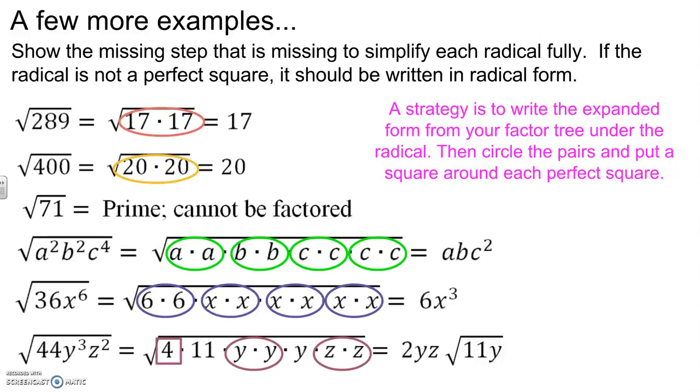Four was a perfect square. So I'm using a little strategy to put a square around this. Square root of four is equal to two. One pair of Y's, one Z. And then 11 and Y, they don't have a pair. And they're also not perfect squares, so they stay within the radical.